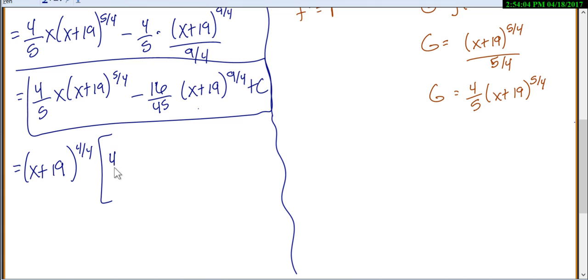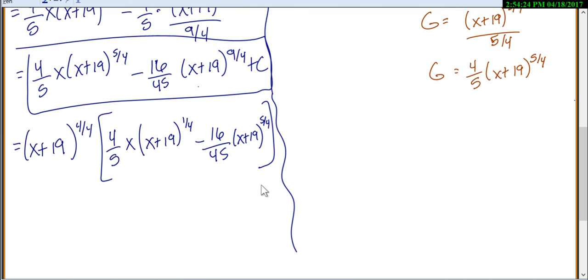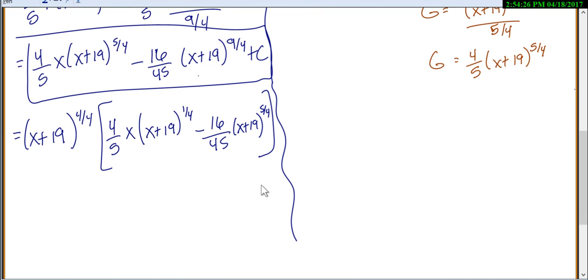Then I'd have left 4/5 x times (x plus 19) to the 1/4 minus 16/45 (x plus 19) to the 5/4. Which might not really seem to be better yet, but notice that this 4/4 cancels. So that's just an x plus 19.